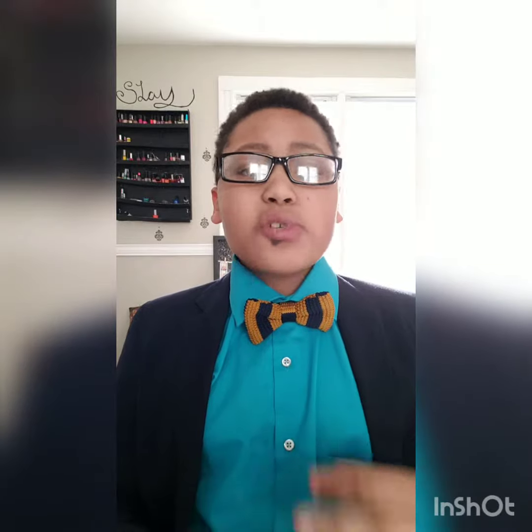The heart has four chambers. The upper two chambers — the left and right atria — are entry points into the heart. The lower two chambers — the left and right ventricles — are contraction chambers that send blood out to the body.